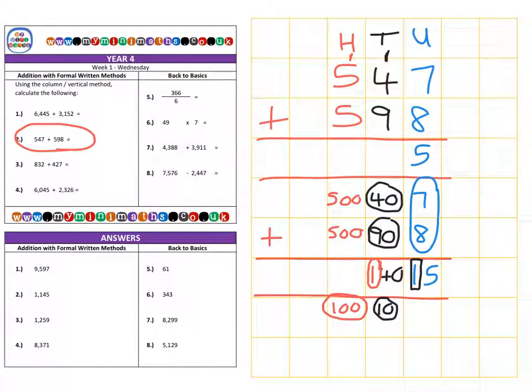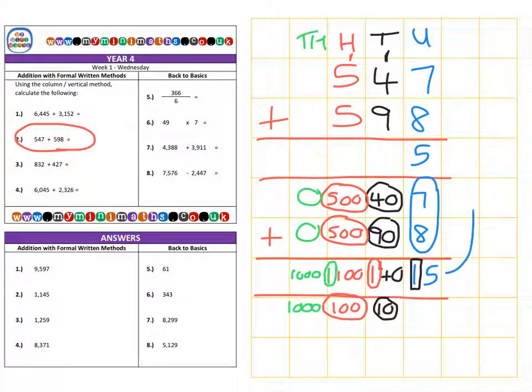And as we can see here that extra 100 here comes over into the next column. So when we add up our hundreds column we have 100 down at the bottom, 500 that's 600, and another 500 that's 1,100. And we can carry this extra thousand over into the thousands column. And as we have no thousands in our thousands column, our 1,000 is placed here. So when we bring our units up we have 5, then we have 4 tens, there's 100, and finally we have 1,000 giving us a final answer of 1,145.